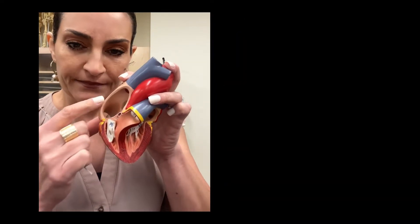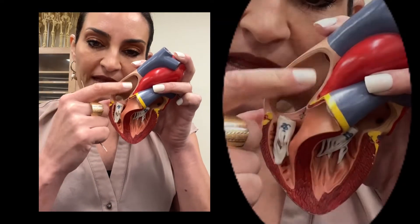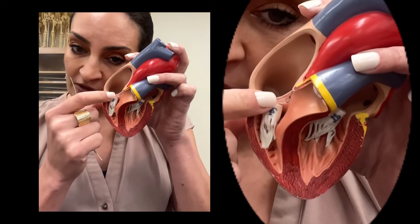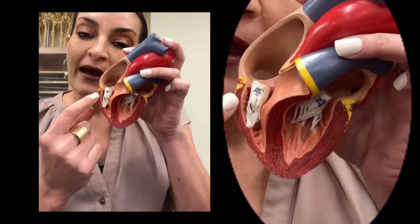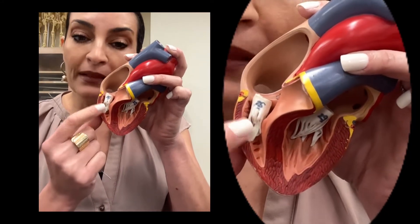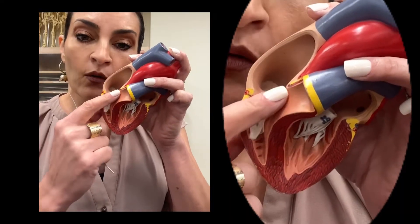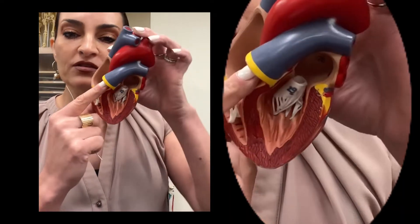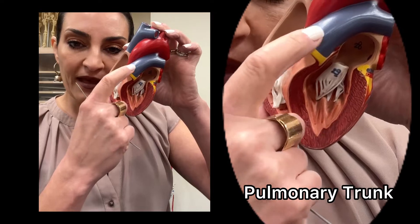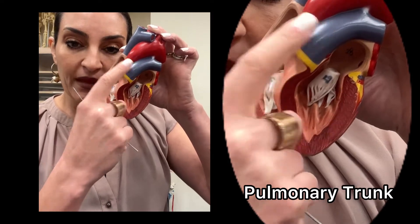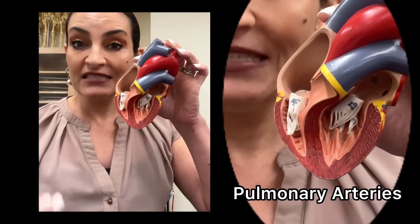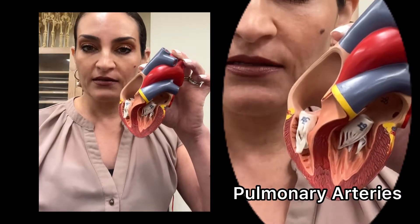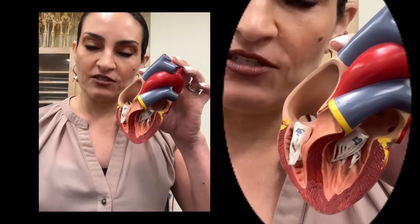Let's keep going with our blood flow inside the heart. Blood inside the right atrium passes through the atrioventricular valve and goes inside the right ventricle. When the right ventricle contracts, blood will flow into the pulmonary trunk. The pulmonary trunk will split into pulmonary arteries that will take the deoxygenated blood to the lungs, where the blood then gets oxygenated.